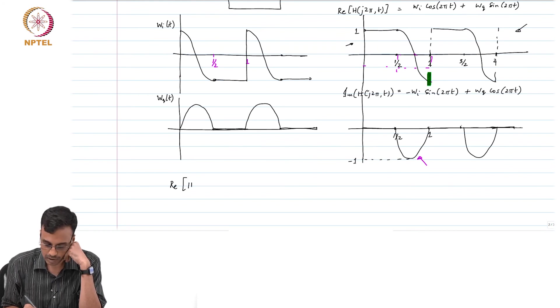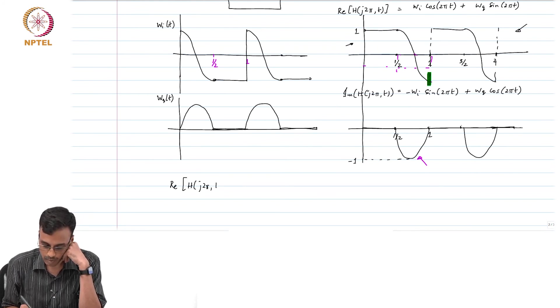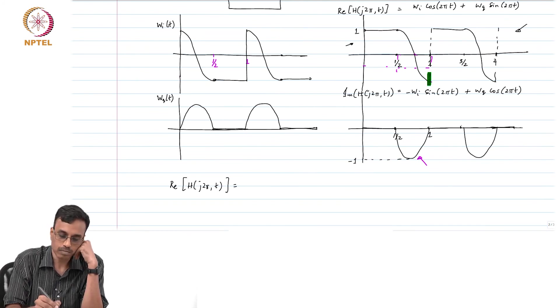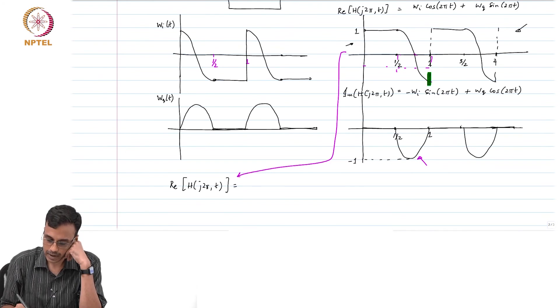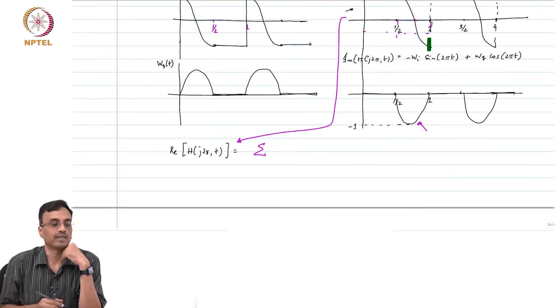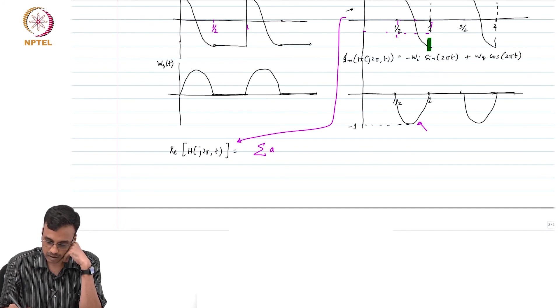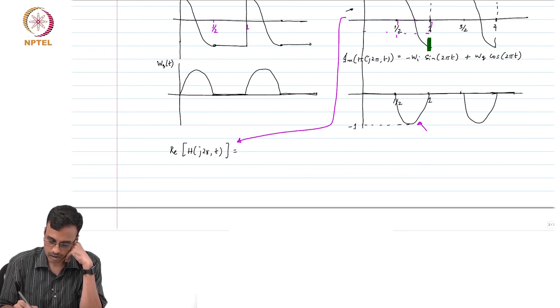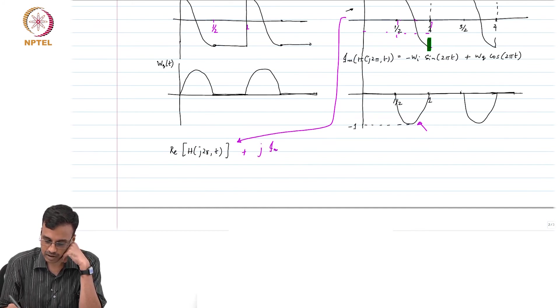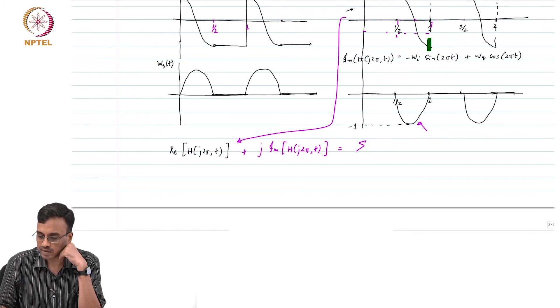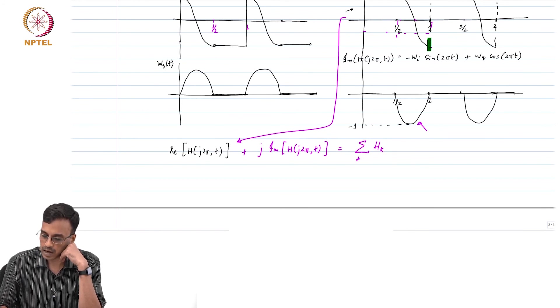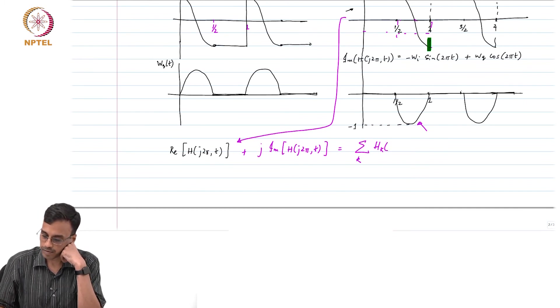Remember, this real part of H of j2π comma t is this waveform here. Right, and you expand this waveform - you expand this as a Fourier series and you will get some - rather, if you do this plus j imaginary H of j2π comma t, what you will get is sigma over k of Hₖ of j2π e^(j2πkt).